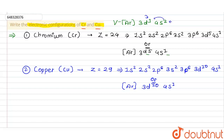For vanadium (Z=23) we have 3d³ 4s². Adding one more electron for chromium would give 3d⁴ 4s², but instead one electron is shifted from the s orbital to the d orbital, making it 3d⁵ 4s¹, because a half-filled d orbital is more stable. The same principle applies to copper.